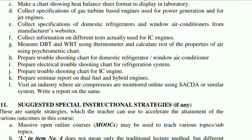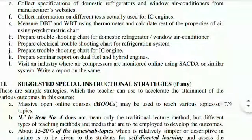Further student activities: Measure DBT and WBT using a thermometer and calculate the rest of the properties of air using a psychrometric chart. Prepare a troubleshooting chart for a domestic refrigerator and window air conditioner. Prepare an electrical troubleshooting chart for a refrigeration system. Prepare a troubleshooting chart for IC engine. Prepare a seminar report on dual fuel and hybrid engines. Visit an industry where air compressors are monitored online using SCADA or a similar system and write a report on the same.